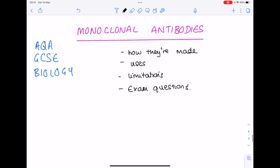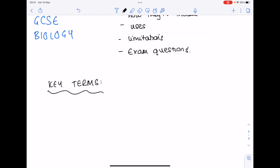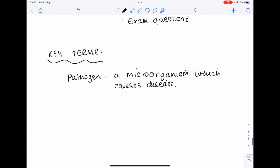Now we need to start with some key terms because without these key terms you won't understand what's going on. So first of all, what is a pathogen? Because this is what you find a lot of monoclonal antibodies are there to fight pathogens. Well a pathogen is a microorganism which causes disease.